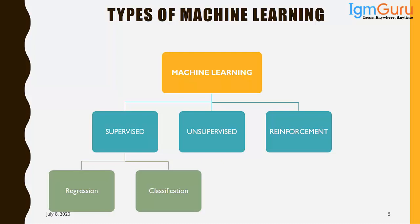Technically, in supervised learning we have a particular event and a particular response — for example, whether a person is buying a car: yes or no. Data in that format is called supervised or labeled data. In unsupervised data you do not have that response — you know the factors that lead to a customer buying a car but not whether they finally bought it. In real life, most data belongs to the unsupervised category, and it takes significant effort and time to convert unsupervised data into supervised data.